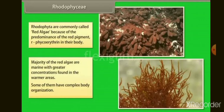Rhodophyta or Red Algae contain R-Phycoerythrin which is a red pigment, R-Phycocyanin which is a blue pigment, Chlorophyll A and D, Alpha and Beta carotene, and Xanthophylls. The reserve food material is in the form of Floridean starch.